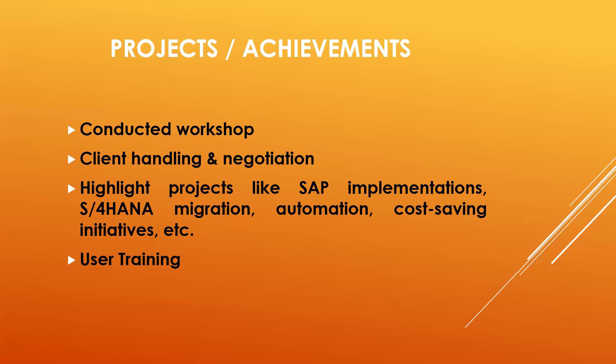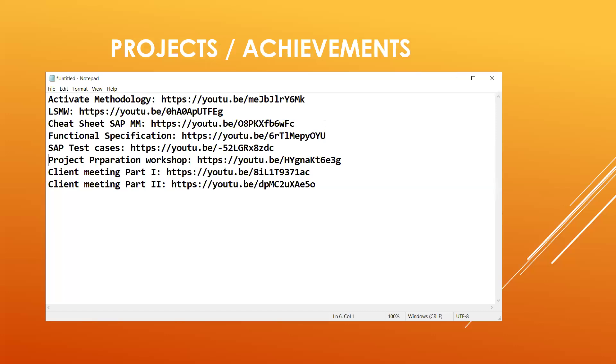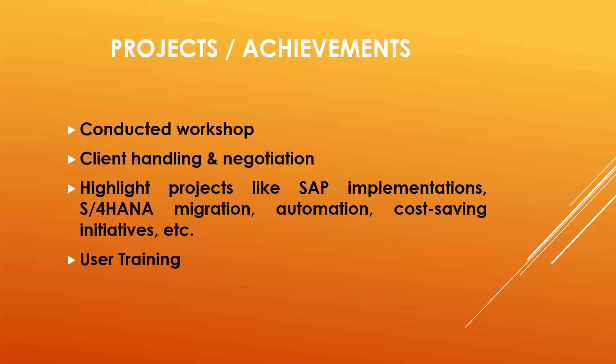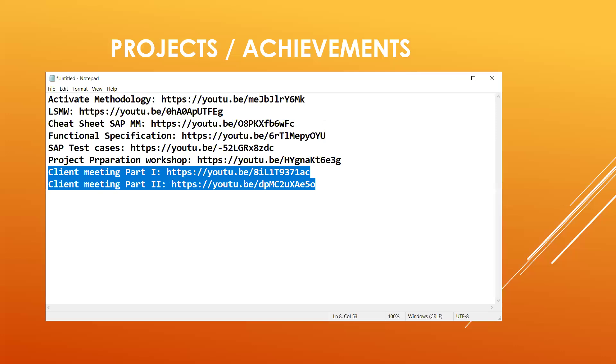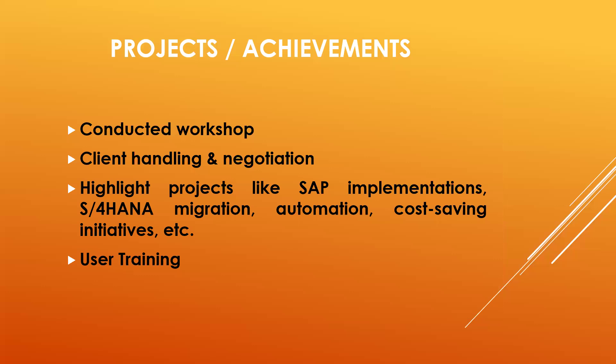Projects and Achievements section: specify workshops you have conducted such as project preparation, kickstart meeting, planning, requirement gathering, design, retrospective, change management, and stakeholder alignment workshops — if you were involved in any of these, specify them. Also mention client handling and negotiation, client meetings, and any minutes of meeting you have created. Highlight key projects such as SAP implementation, S/4HANA migration, automation initiatives, cost saving initiatives, and any user training sessions you have delivered.